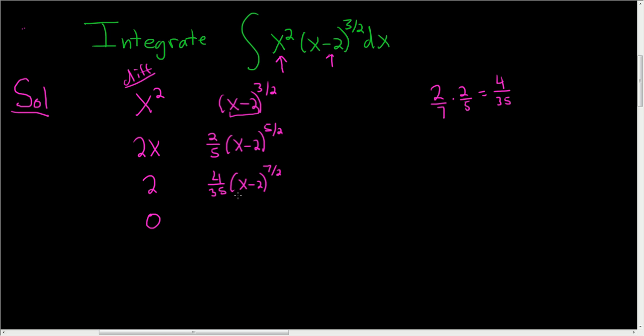Then we have to do it again. We add two halves, so we're going to get nine halves this time. So x minus two to the nine halves. And then dividing by nine halves is the same as multiplying by two-ninths. So we're doing two-ninths times four over thirty-five, and this is equal to eight, and nine times thirty-five is three-fifteen. So we get eight over three-fifteen.